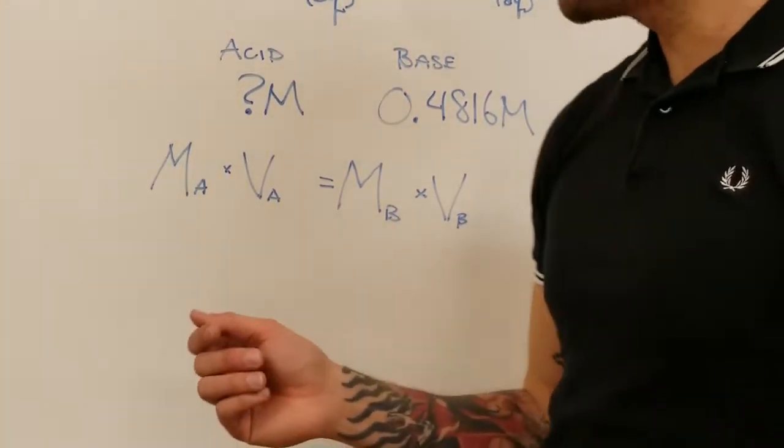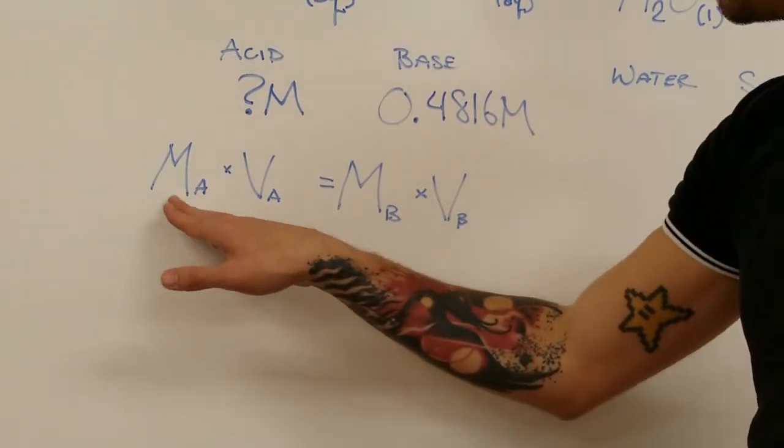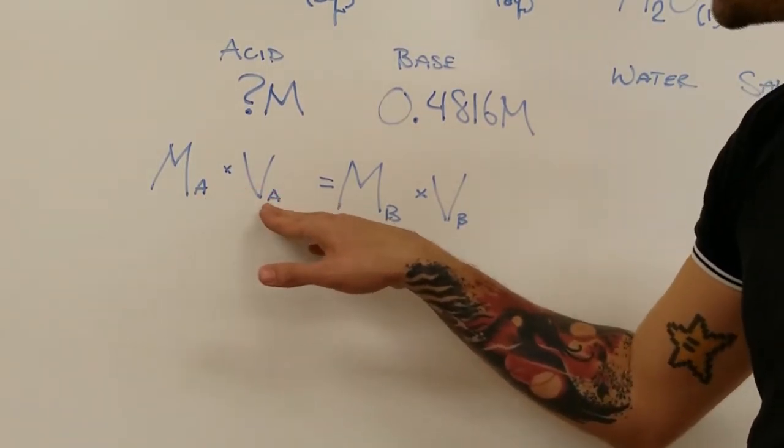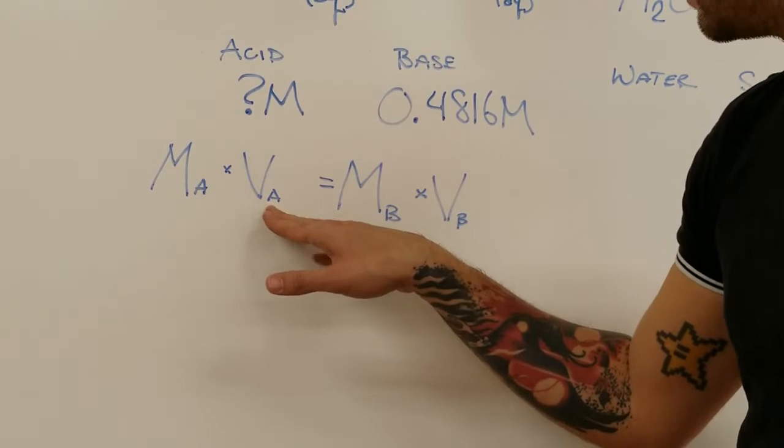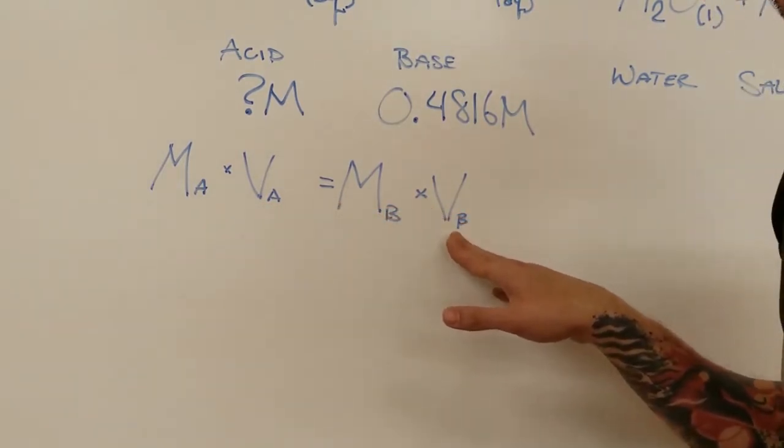Now in this titration, we're going to be using the titration equation, which is that the molarity of the acid times the volume of the acid that is used in the reaction equals the molarity of the base times the volume of the base that gets used in the reaction.